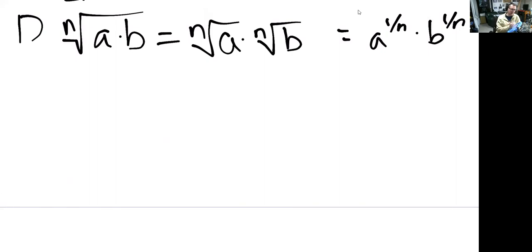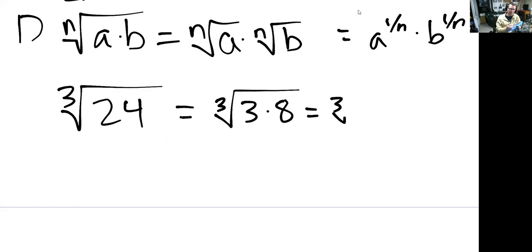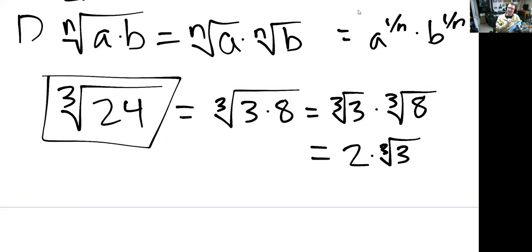So what this says is if you have something like the third root of 24, you can factor that 24 out. It's three times eight. And we can split that up. The third root of three times the third root of eight. The third root of three is an irrational number, but the third root of eight I do know that's two. So this is just two times the third root of three, which is more concrete and computationally more efficient to calculate.